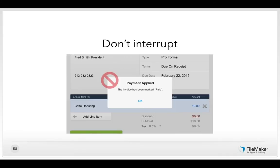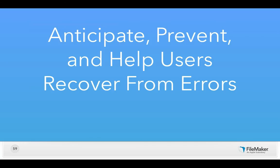Make sure not to interrupt. People's attention is limited and fragile, and if you interrupt somebody it will take them a while to regain focus. Only interrupt when you absolutely have to. The other important element for efficiency is anticipating, preventing, and helping users recover from errors. We are all human — people who use our software will make mistakes, and the way you help users recover makes all the difference.